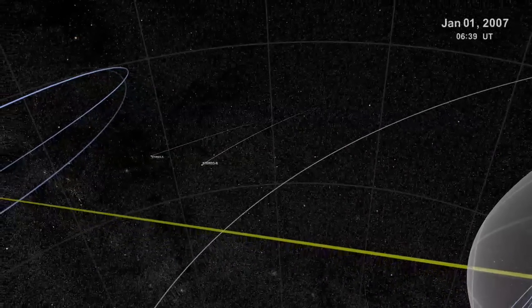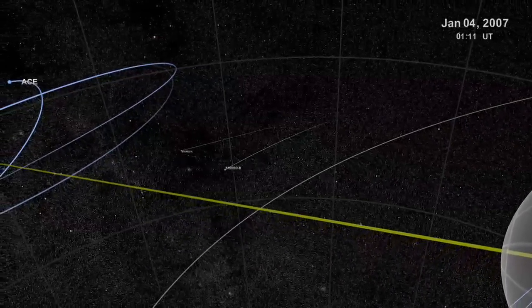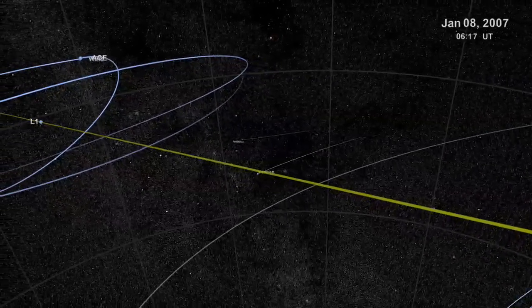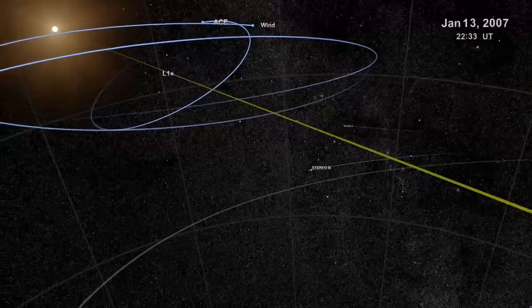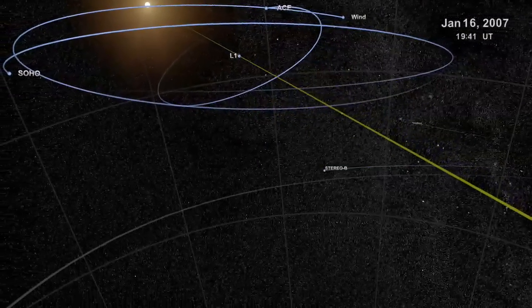Remember I said to keep an eye on stereo's flight path? Watch as one of the two stereo vehicles intercepts the moon's orbit a second time. Here it comes.